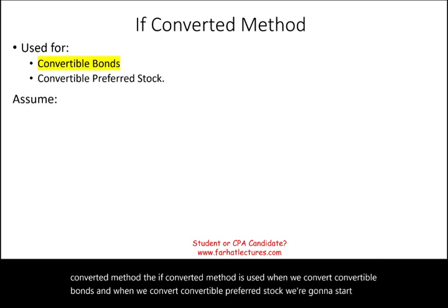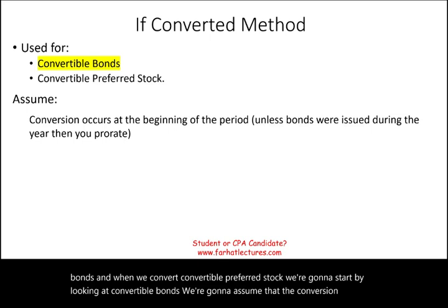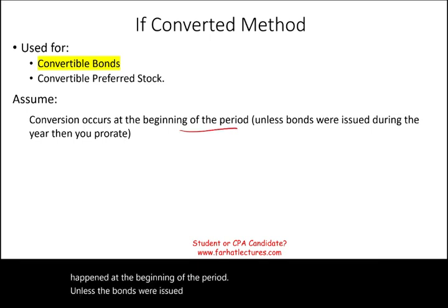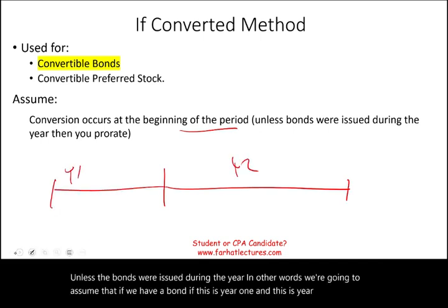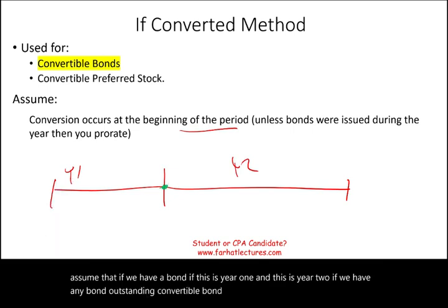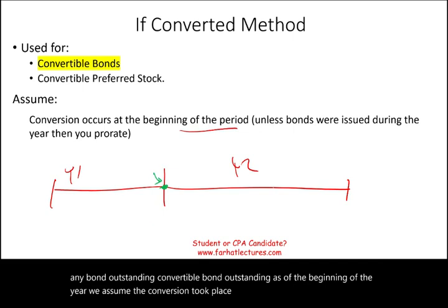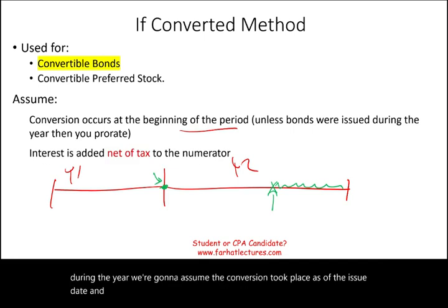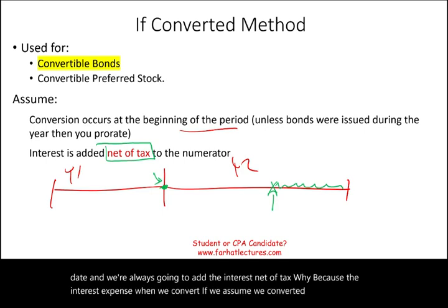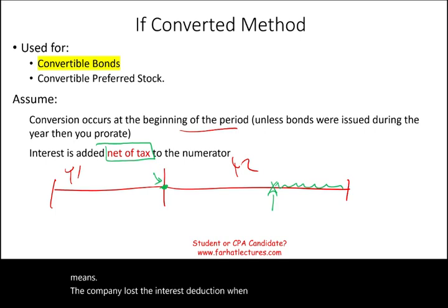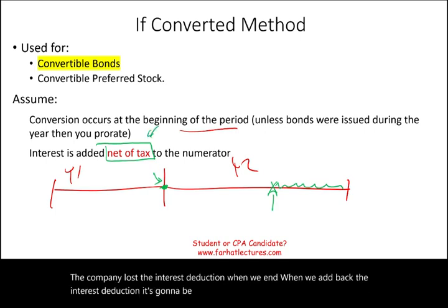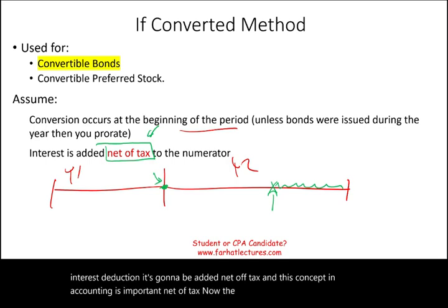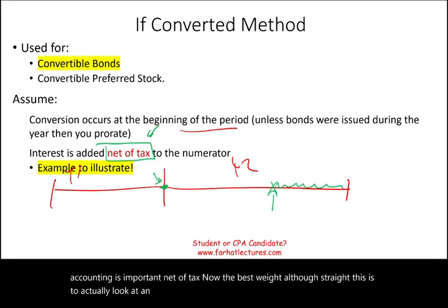We're going to start by looking at convertible bonds. We're going to assume that the conversion happened at the beginning of the period, unless the bonds were issued during the year. If we have a bond outstanding as of the beginning of the year, we assume the conversion took place at the start of the year. If the bonds were issued during the year, we assume conversion took place as of the issue date. We always add the interest net of tax, because if we assume we converted the bond, the company lost the interest deduction — so when we add it back, it's net of tax.